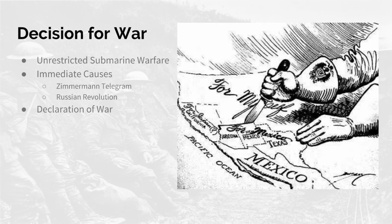Other immediate causes for the decision of war was the Zimmermann Telegram. On March 4th, the U.S. was given intelligence from Great Britain saying they had intercepted a telegram from Germany to Mexico that promised Mexico Texas, Arizona, and New Mexico if they decided to help Germany invade the United States.